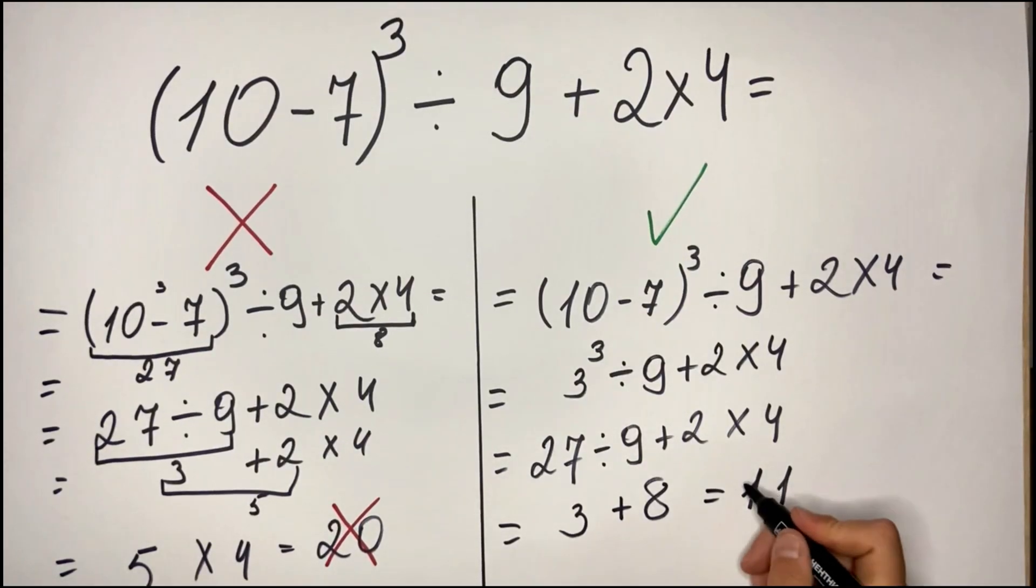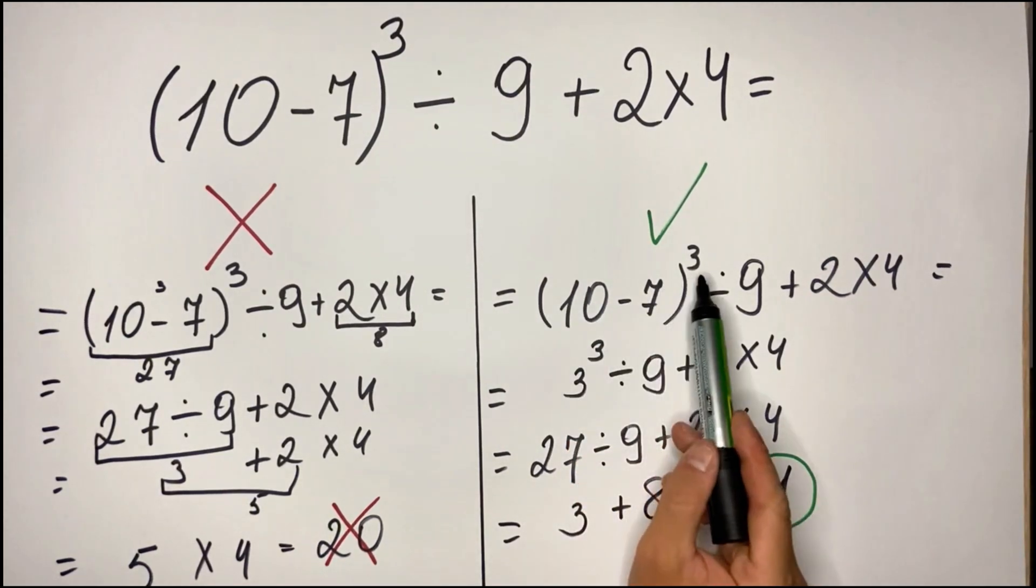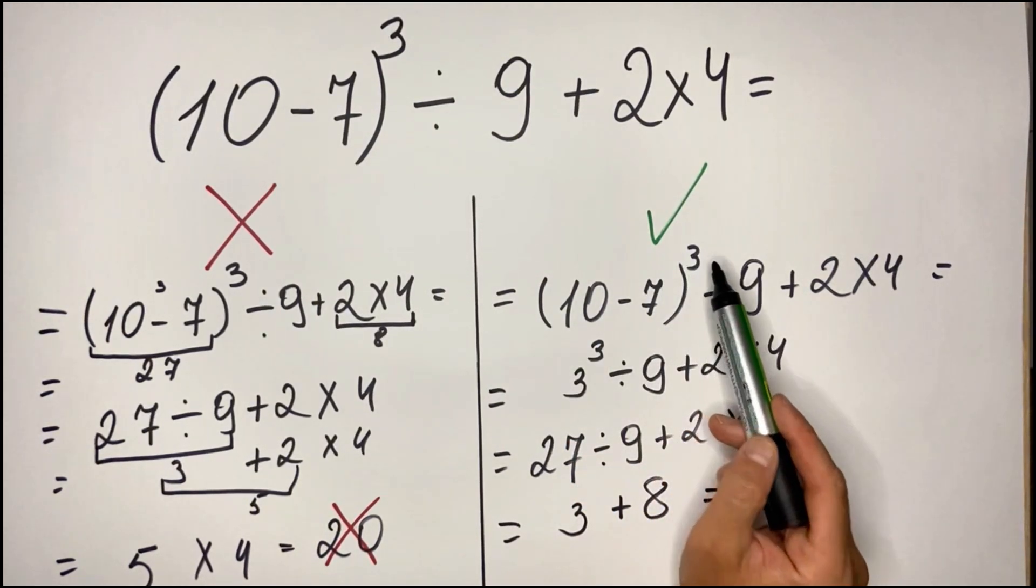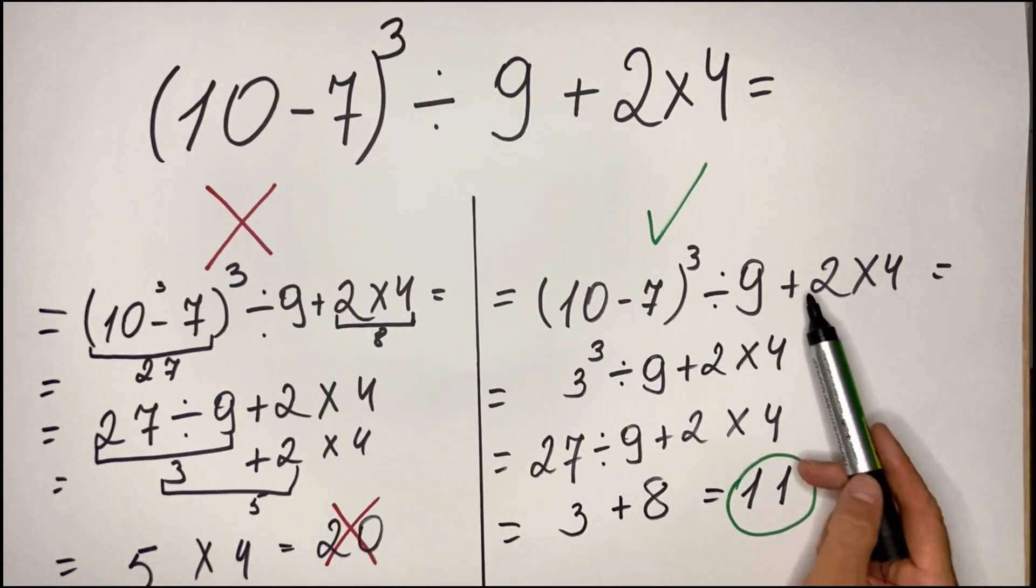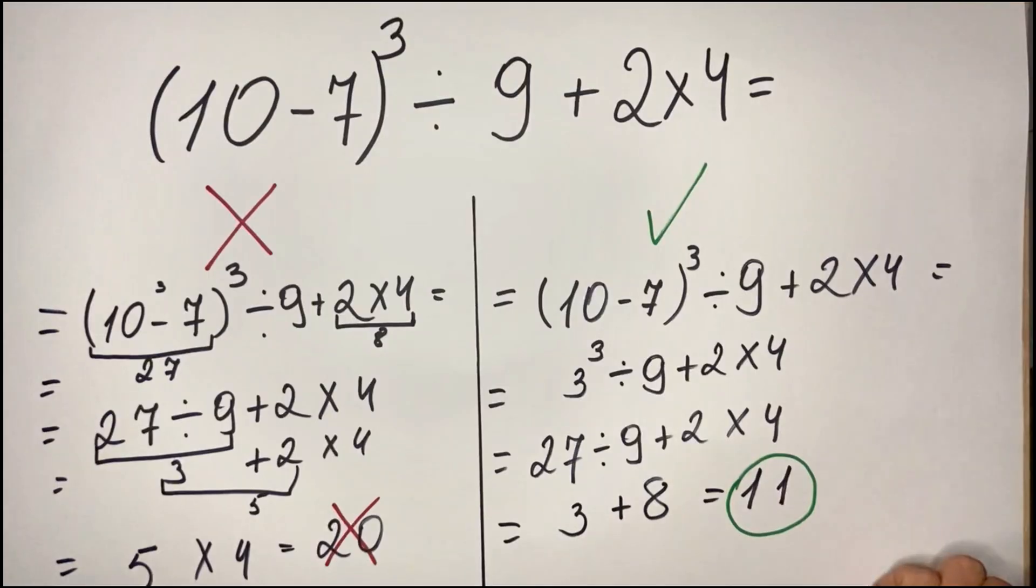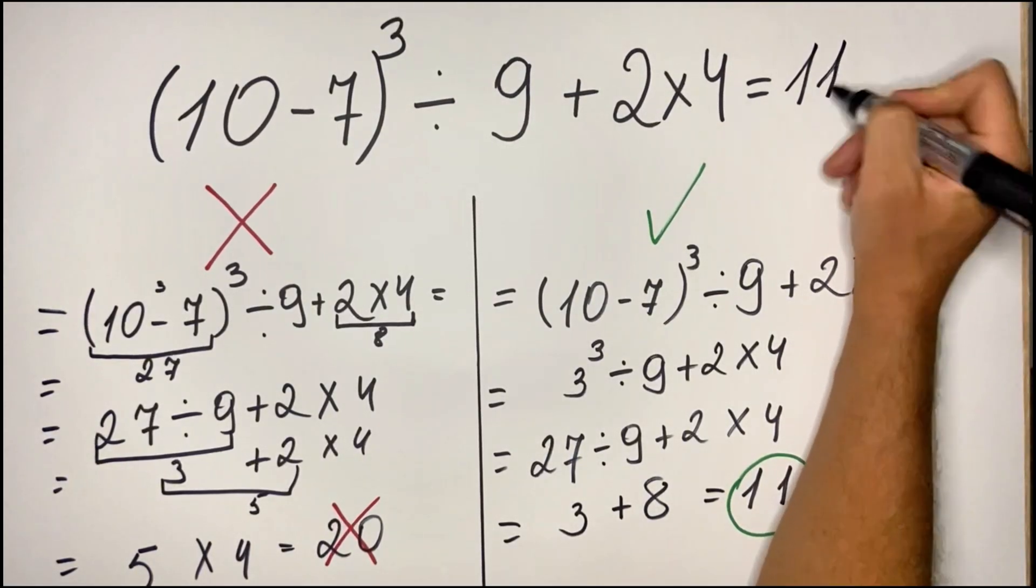So first, this is the correct result. Why? As we saw, we follow the order of operation. So we first did whatever is in parentheses, we did the cube, then we follow the left to right, the division and multiplication, and at the end we have the addition. So the answer is 11.